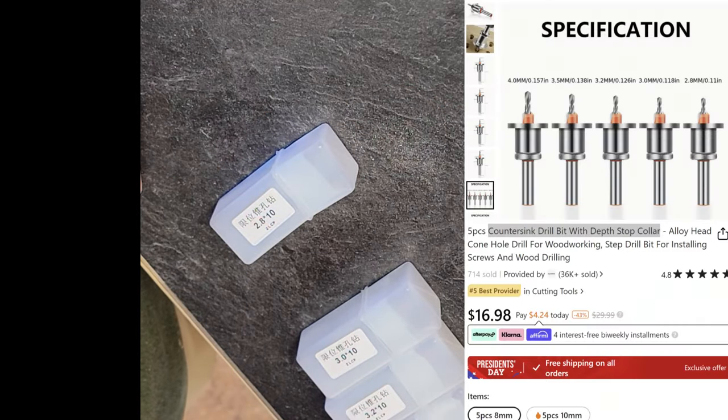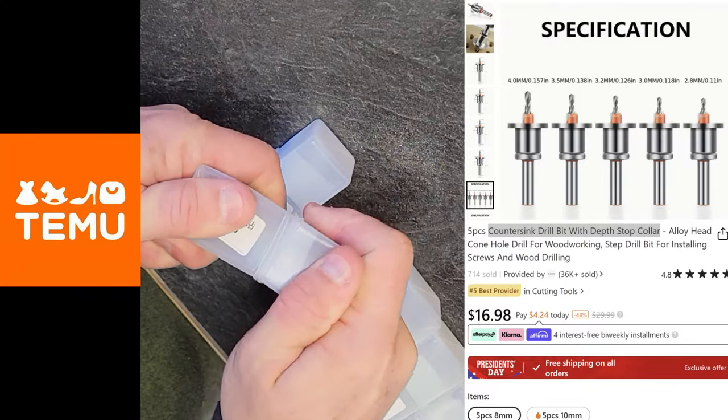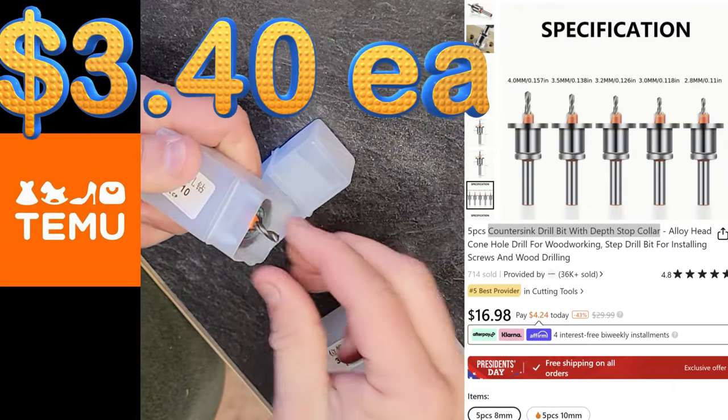So, where did I find this? Well, you guessed it, it's on Teemu. And for a kit of five, it's $16.98, which is only $3.40 each.